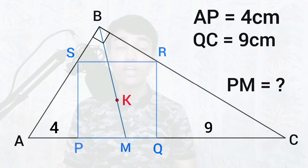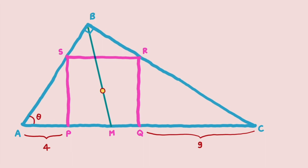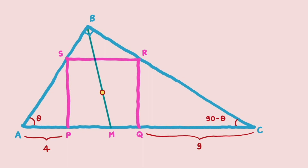Let us find the length of PM. First, we find the side length of the square. It is given that AP = 4 cm and QC = 9 cm. We let angle A equal theta. Applying the angle sum property in triangle ABC gives angle C = 90 - theta. Since PQRS is a square, all four sides are equal — we label this side length as Y — and all four corner angles are 90 degrees.